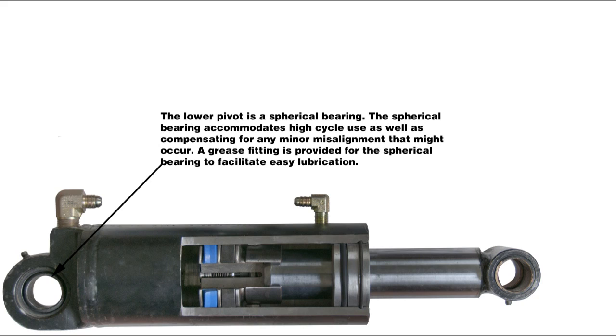The lower pivot is a spherical bearing. The spherical bearing accommodates high cycle use as well as compensating for any minor misalignment that may occur. A grease fitting is provided for the spherical bearing to facilitate easy lubrication.